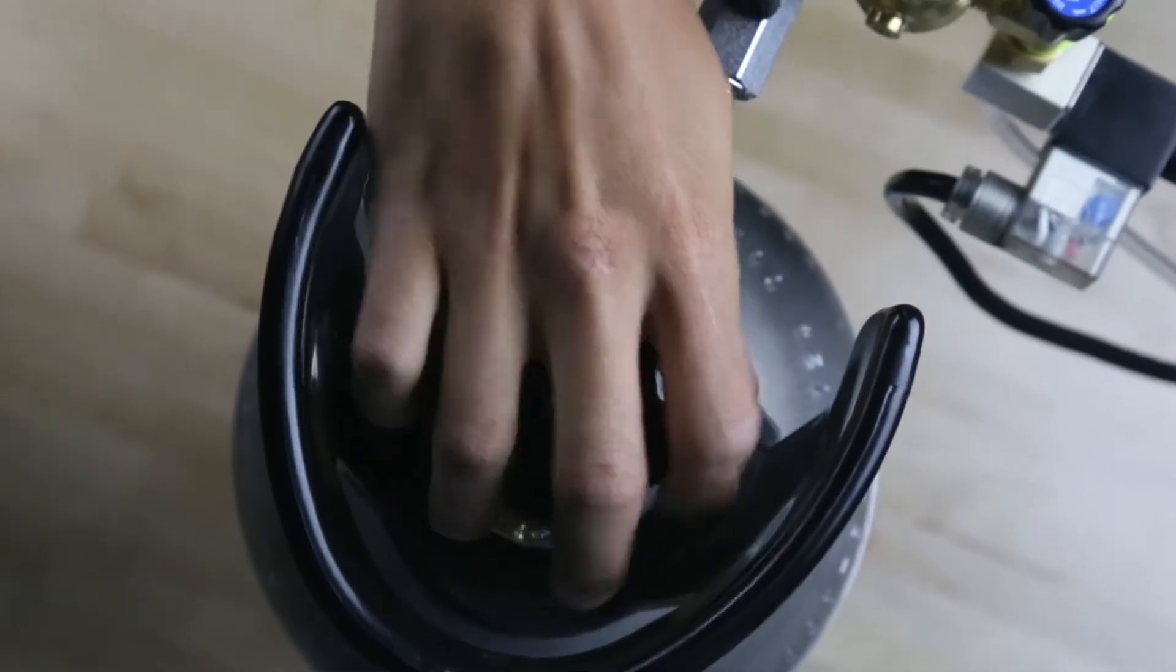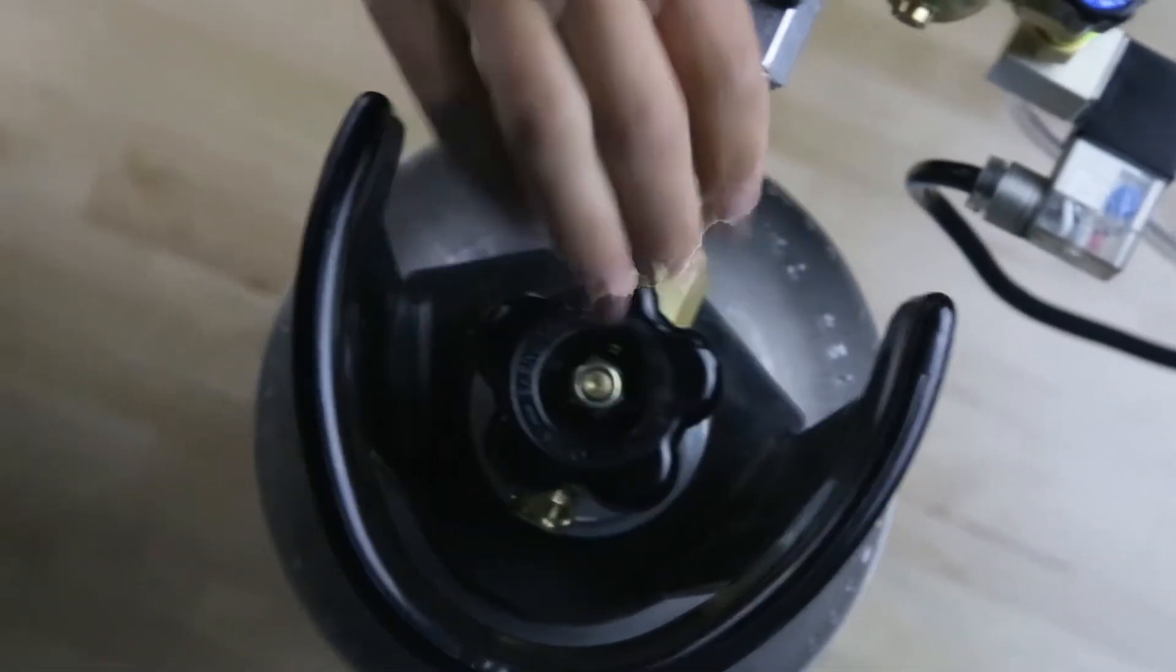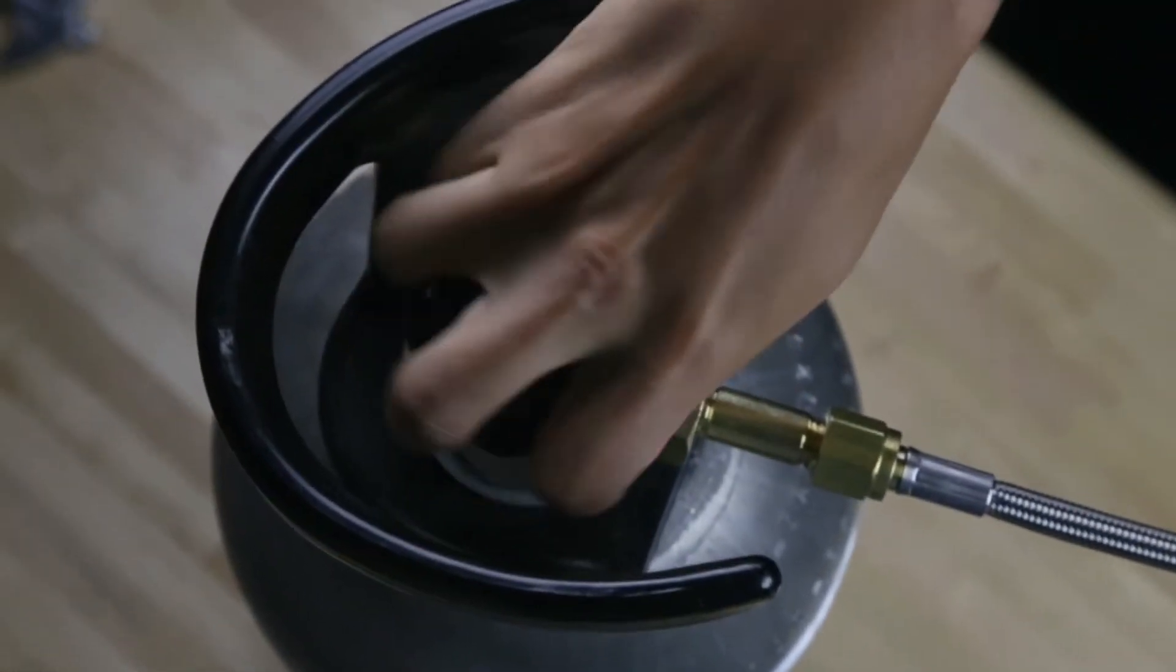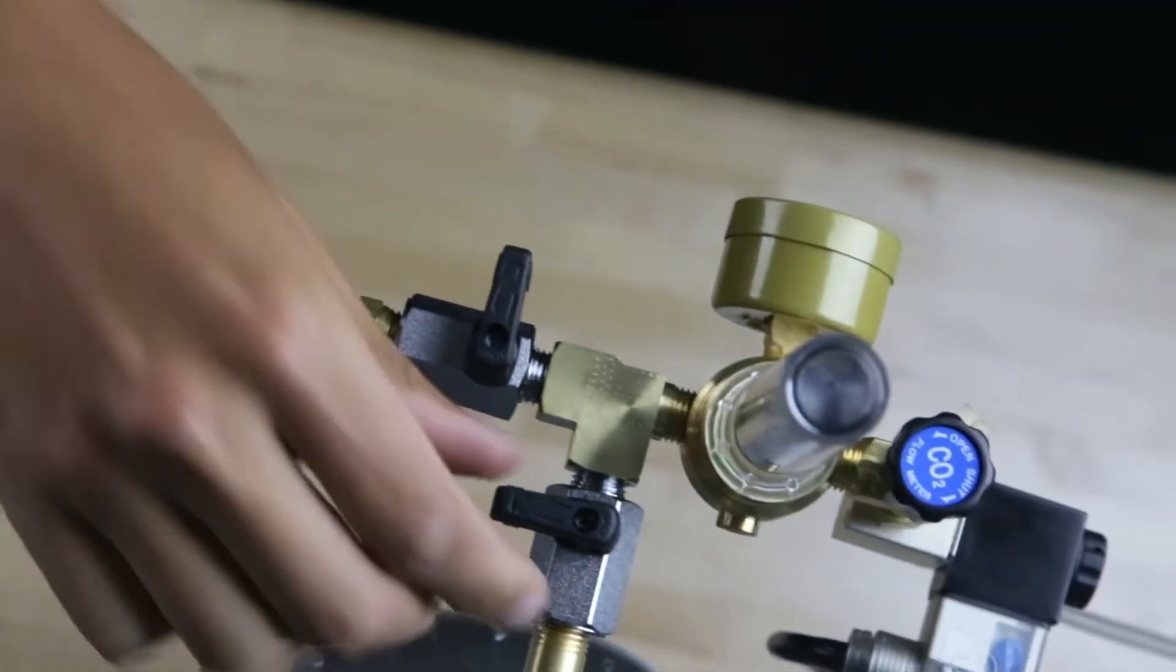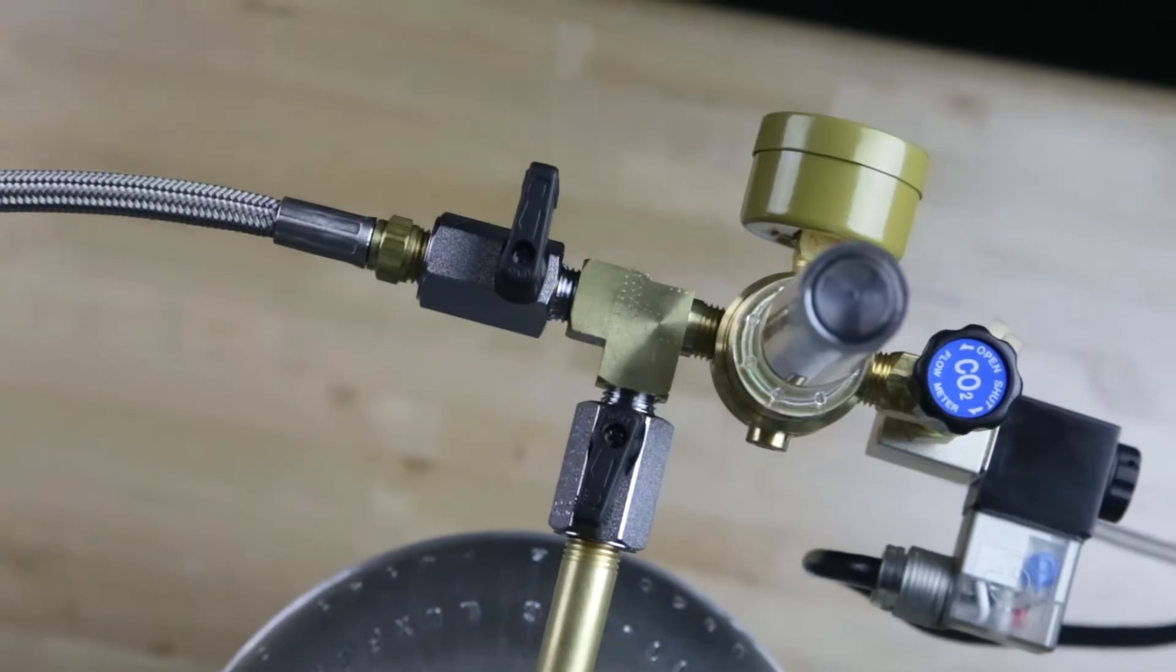Next, open the valves on your CO2 tanks, two or three rotations, and open the shutoff valves to either one or both tanks. The two valves allow the tanks to be used one at a time or simultaneously.